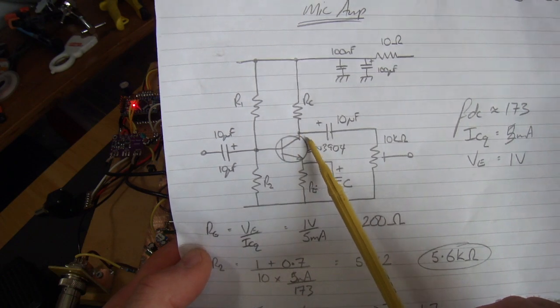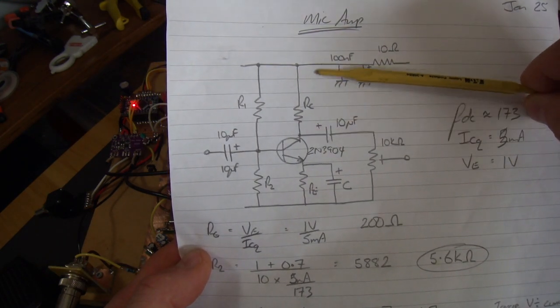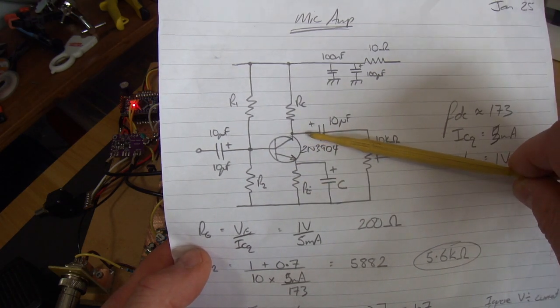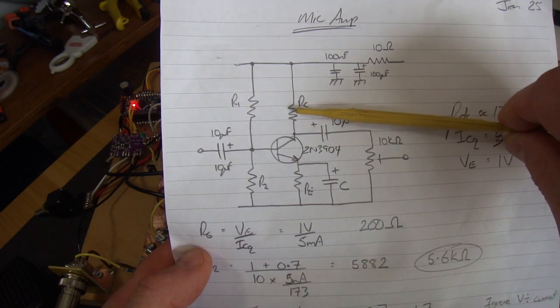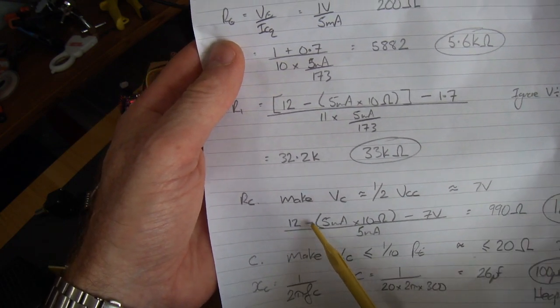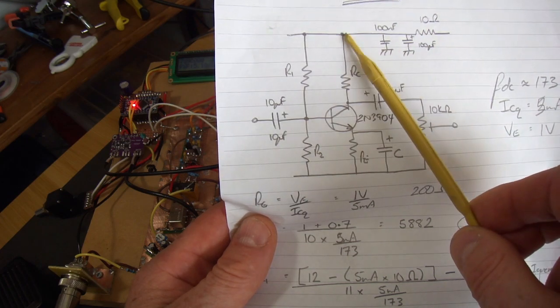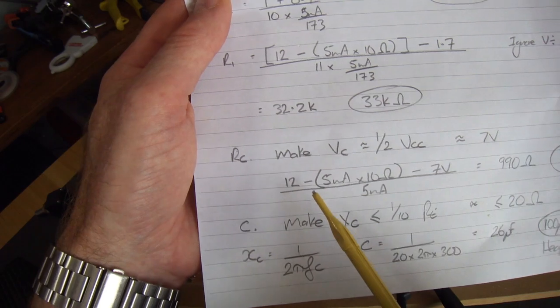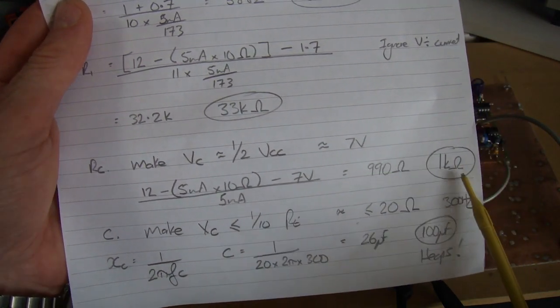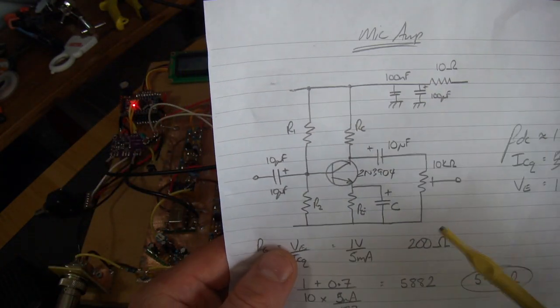In terms of where I want to situate the quiescent collector voltage, I want that to be roughly halfway between ground and VCC to give me the greatest amount of voltage swing for an input. But I do note that the emitter is already sitting a volt up, so I'm going to sit this at 7 volts rather than 6. So 12 volts minus that small voltage drop minus 7 volts divided by 5 milliamps comes out at 990 ohms, I'm going to use 1k ohm.